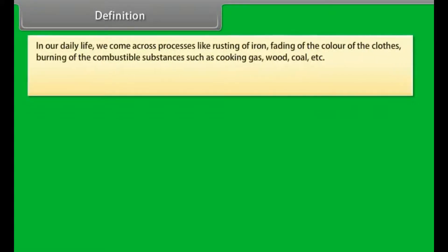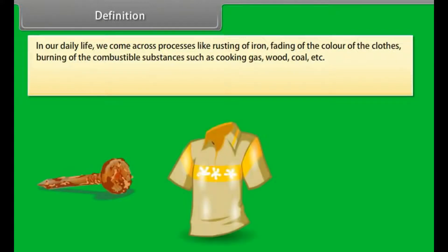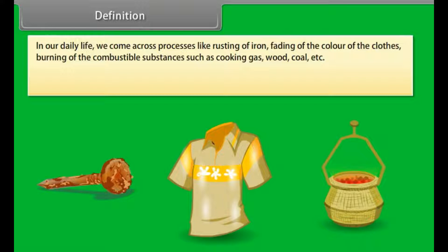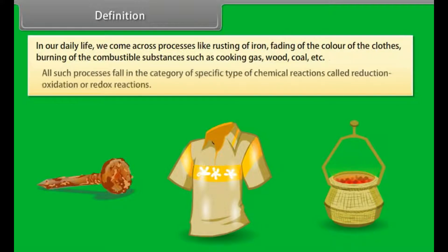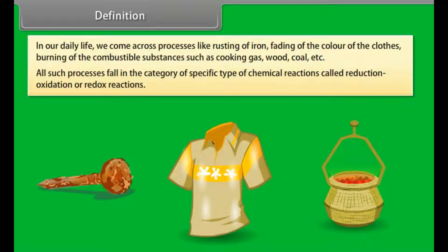In our daily life, we come across processes like rusting of iron, fading of the color of clothes, burning of combustible substances such as cooking gas, wood, coal, etc. All such processes fall in the category of a specific type of chemical reaction called reduction-oxidation, or redox reactions.